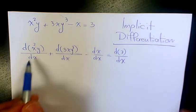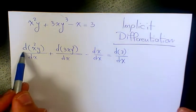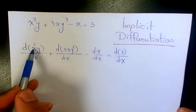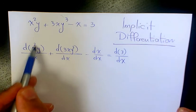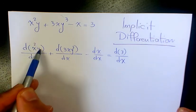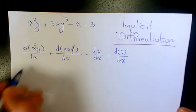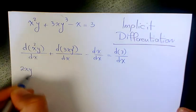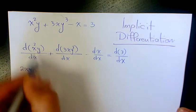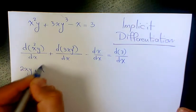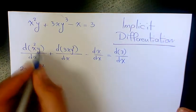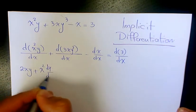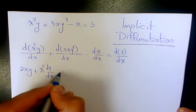For this part I need to use the product rule. The derivative of x squared times y is going to be 2xy plus x squared times the derivative of y, which is dy over dx.